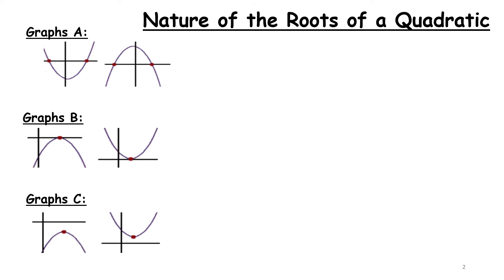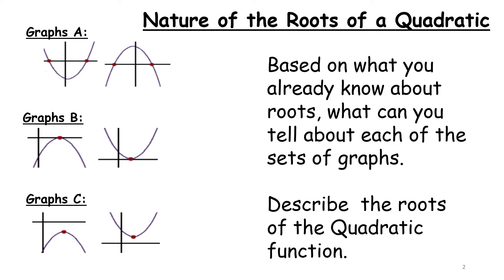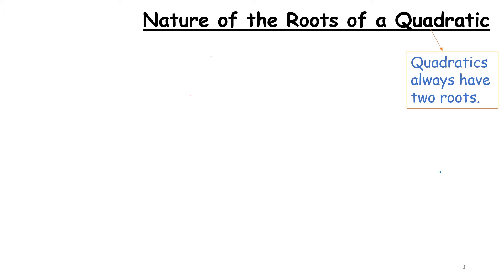Before we talk about complex numbers, let's look at where they come from. If we go back to the algebra section of the course, where we looked at the nature of the roots of a quadratic function, that will give us a bit of context. In that section we would have talked about three graphs — what can you say about the roots of each of these quadratics? A quadratic always has two roots because of that degree 2.